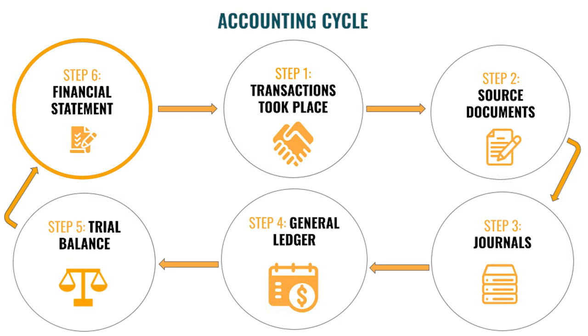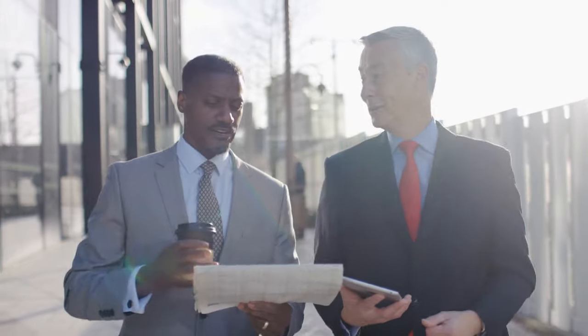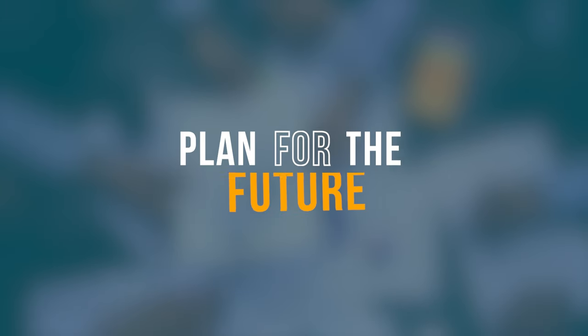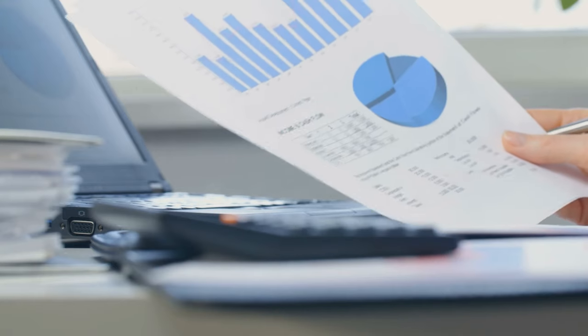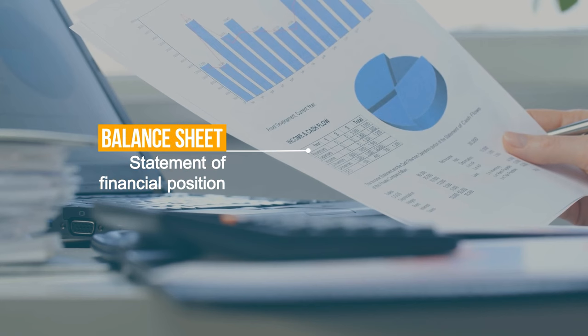Let's recap. The accounting cycle indicates the route a business transaction follows from the moment the transaction takes place to when all transactions are recorded to show the financial position of the business. Once we follow the accounting cycle, we are left with reports of the Financial Statements that show how a business or organization has performed. It also provides information required to plan for the future. The Balance Sheet, also known as the Statement of Financial Position, shows the financial position of a business on a specific date.